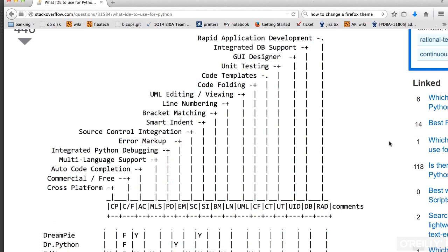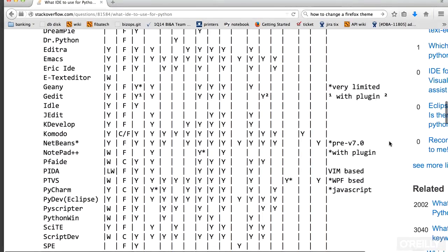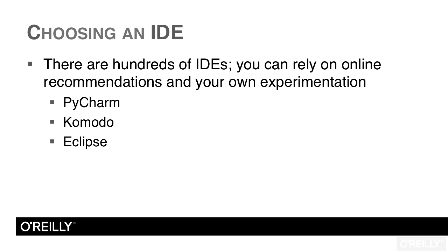In this page from Stack Overflow, a helpful contributor has listed out many of the features that we look for in IDEs, and then a list of IDEs that support each feature. Some of the more popular IDEs for Python are PyCharm, Komodo, and Eclipse, which is actually written specifically for Java but has a Python plugin. Most of the features on each IDE are pretty much the same.